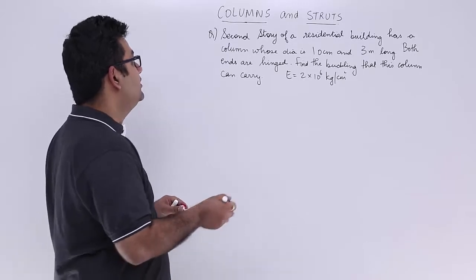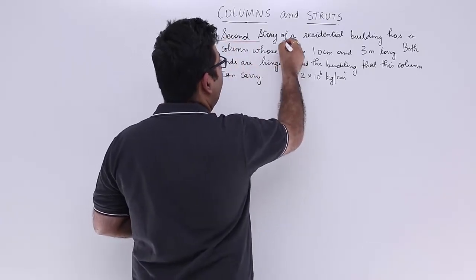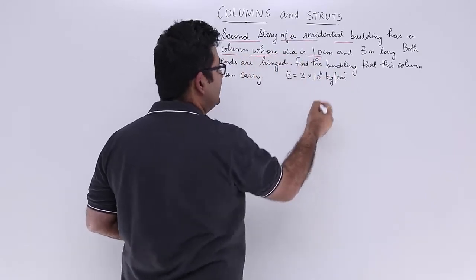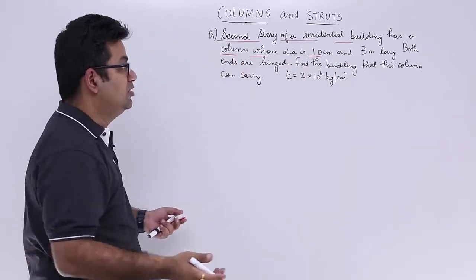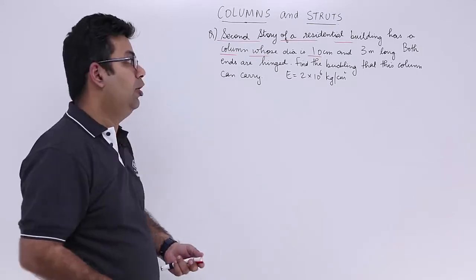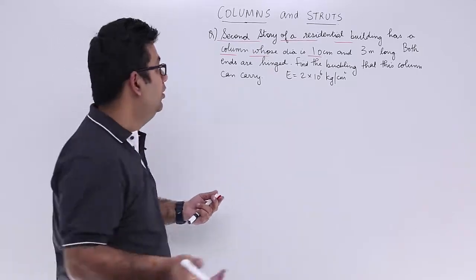So the very first question says, a second story of a residential building has a column whose diameter is 10 cm and is 3 m long. I don't know whether this column is of some practical value or not, but there is a column.